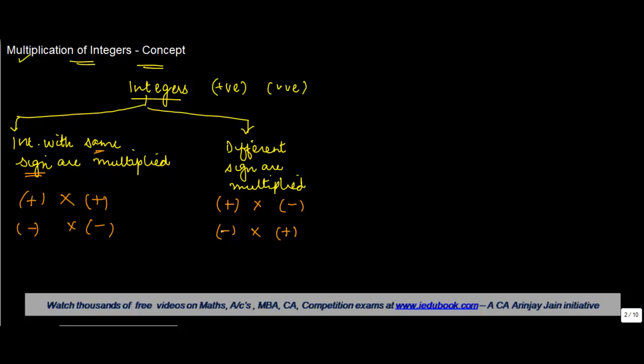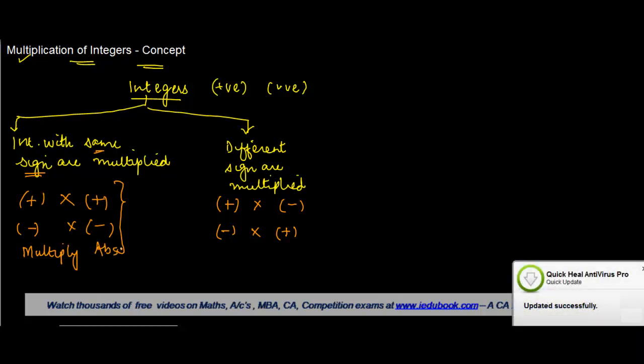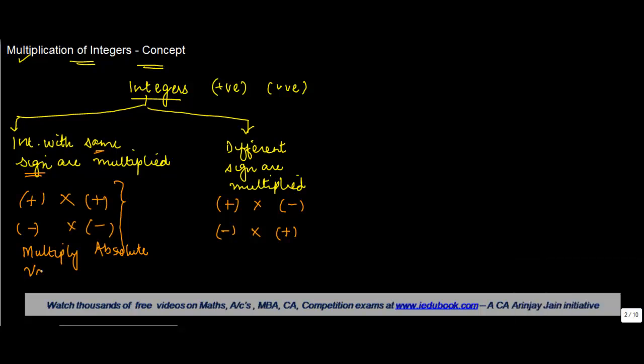When integers with same sign are multiplied, what do we do? We multiply the absolute values. What we mean by absolute values is what we saw earlier, which means the positive numbers, and put a plus sign.